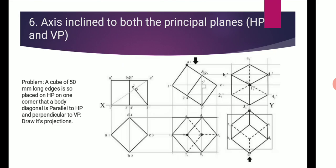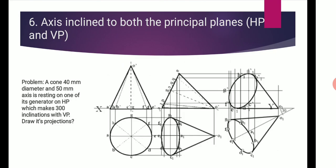The axis inclined to both principal planes, HP and VP, are drawn below for your example by using the solid cube. In the cone, an inclined example problem has been given.